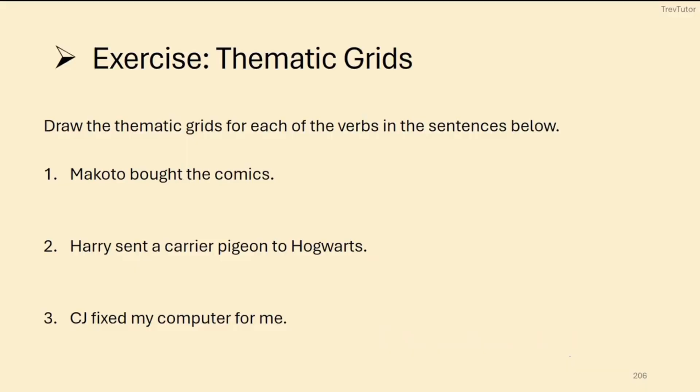So let's make thematic grids for each of these verbs: bought, sent, and fixed. In the case of bought, bought requires a buyer and a buyee. It requires an agent and requires a theme. So we can say that the theta grid for this is agent and then theme.